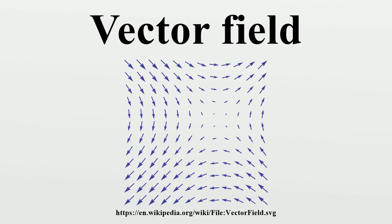Examples: A vector field for the movement of air on Earth will associate for every point on the surface of the Earth a vector with the wind speed and direction for that point. This can be drawn using arrows to represent the wind. The length of the arrow will be an indication of the wind speed. A high on the usual barometric pressure map would then act as a source, and a low would be a sink, since air tends to move from high pressure areas to low pressure areas.